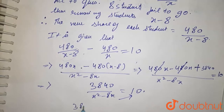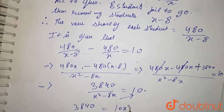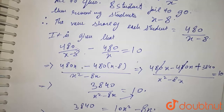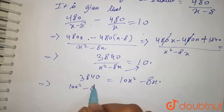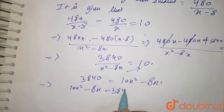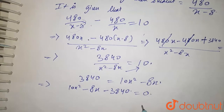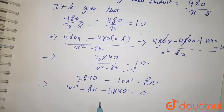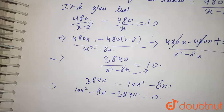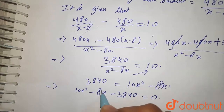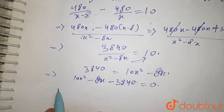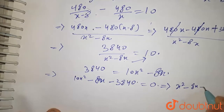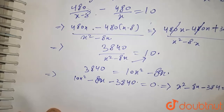By cross multiply, 3840 equals 10X squared minus 80X. So our quadratic equation becomes 10X squared minus 80X minus 3840 equals 0. Now taking 10 common, this equation becomes X squared minus 8X minus 384 equals 0.